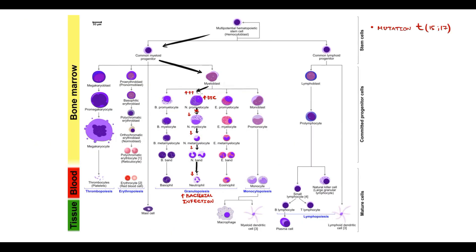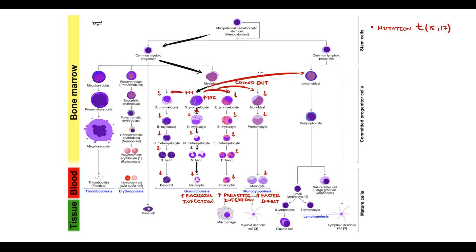Disrupted maturation of neutrophils results in neutropenia, greatly increasing the risk of bacterial infections, visible on blood analysis as extremely low bands and segmented forms. Promyelocytes, being mutated, are very aggressive — they proliferate rapidly and invade the bone marrow space. Since bone is non-distensible, promyelocytes crowd out all other cells: eosinophil precursors (increasing parasitic infection risk), monocyte precursors (increasing bacterial infection risk), basophil precursors, lymphocyte precursors (causing lymphopenia and increasing viral infection risk), erythrocyte precursors (causing anemia), and platelet precursors (causing thrombocytopenia).